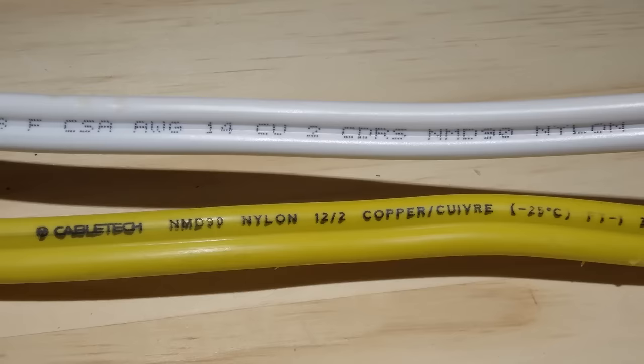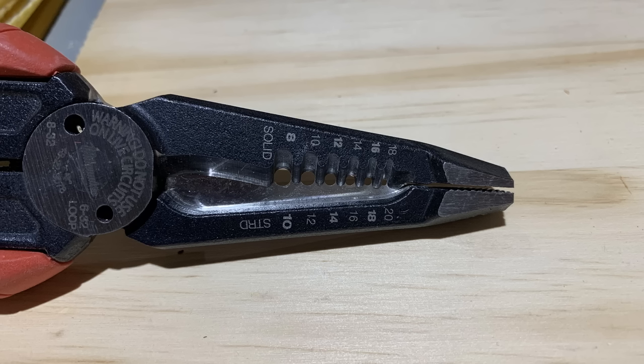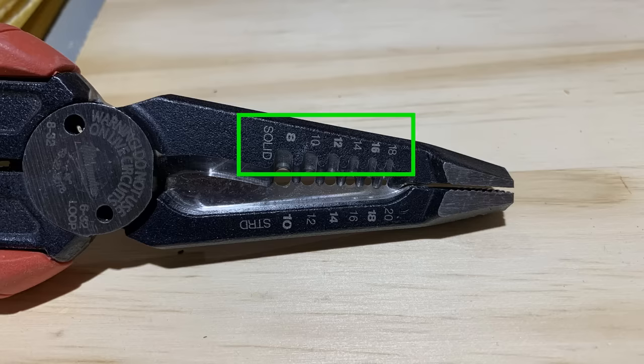In North America, typically white Romex is 14 gauge wire and yellow Romex is 12 gauge wire, but check the labeling on the outside of the sheath to confirm. Make sure you line up the wire with the correct cutter slot. If your cutters have markings for solid and stranded wire, like my Milwaukee six-in-one electrician's pliers do, make sure you use the solid wire markings.